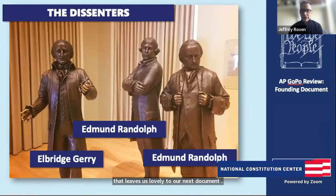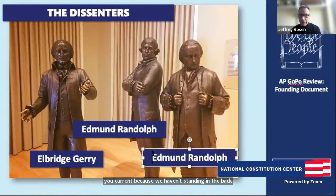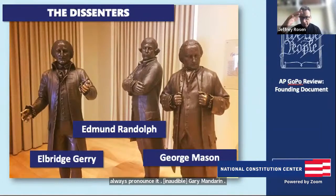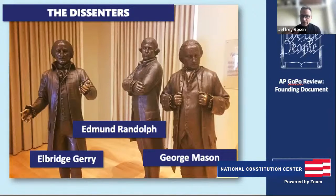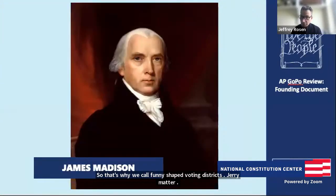The dissenters stood in the back of Signers Hall at the Constitution Center. They were led by George Mason of Virginia, Edmund Randolph of Virginia, and Elbridge Gerry of Massachusetts. You can always pronounce it 'Gary-mandering' rather than gerrymandering — because Gerry was the guy who came up with voting districts shaped like salamanders in order to protect incumbents in Massachusetts. That's why we call funny-shaped voting districts gerrymanders.